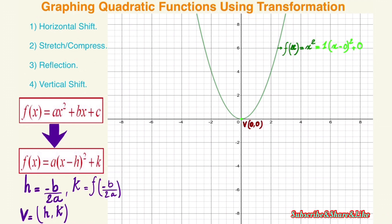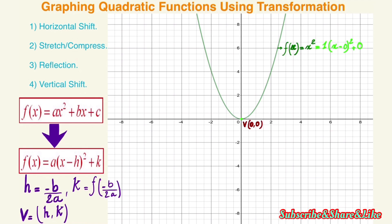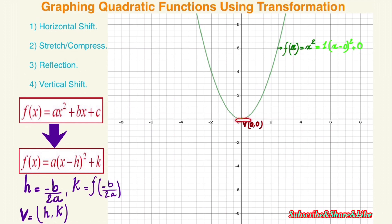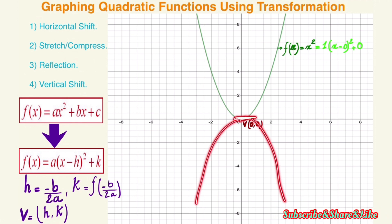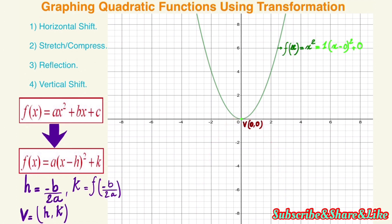This h and k represent the vertex point. The vertex point is usually the lowest point or the highest point in a graph. If the graph opens up, it will be the lowest point — the minima. If the graph opens down, it will be the maxima, the highest point on the graph, like a mountain — or like a hole in the ground for the lowest point.